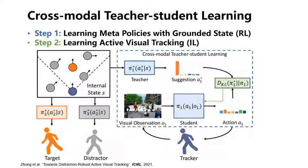A grounded state is just the spatial location of an agent in the environment without appearance information. Then imitation learning is employed to efficiently impart knowledge learned by the meta-policies to the active view tracker in the near-realistic environment.